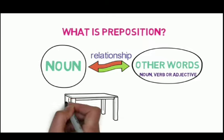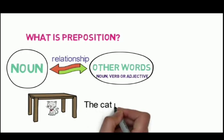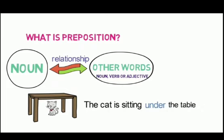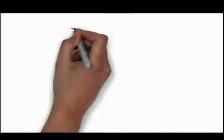Look at this picture — the cat is sitting under the table. Here the preposition 'under' is making the relationship between the cat and the table. The cat is the subject. If we do not add 'under,' the sentence becomes incomplete: 'the cat is sitting the table' is unclear. Adding the preposition makes it complete: 'the cat is sitting under the table.'